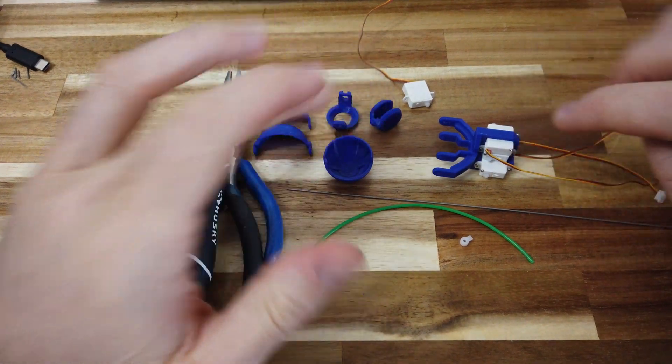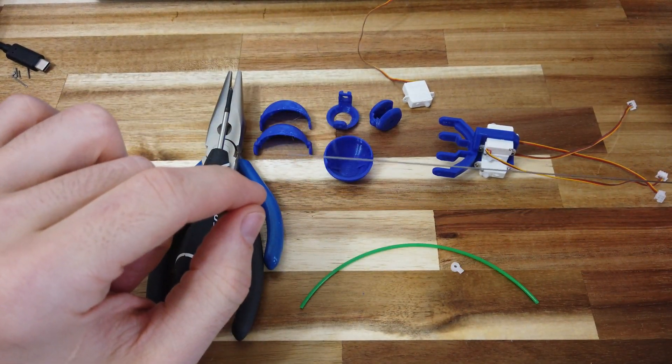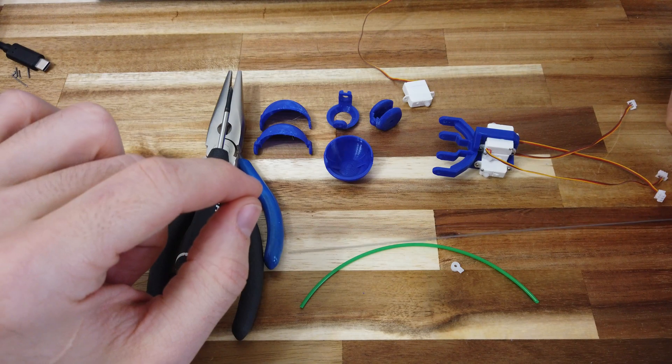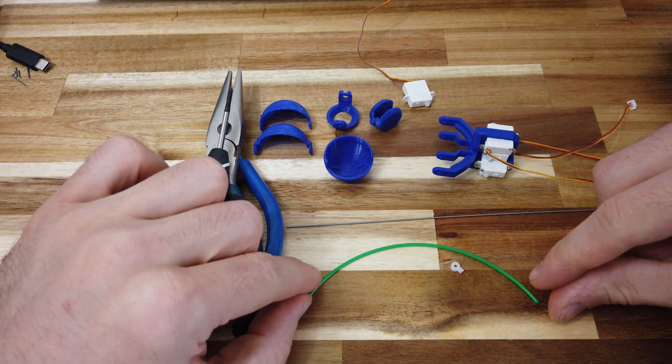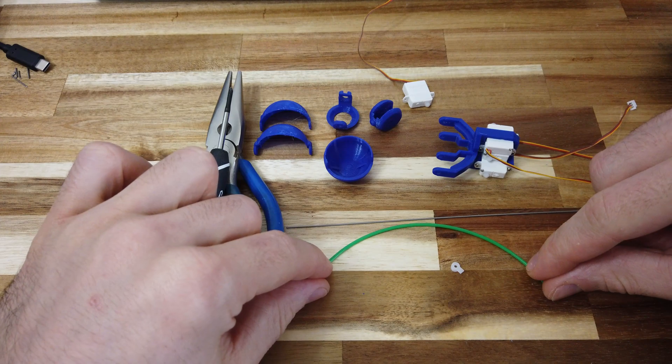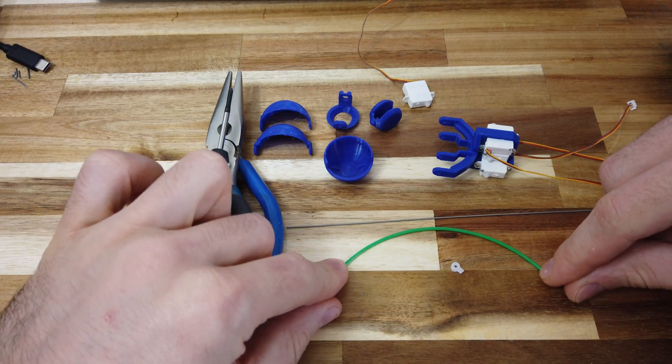In addition to the 3D printed parts and the servos, I've got some 30 thousandths music wire, which is just a stainless steel that can be bent, a short length of 3D printer filament, and this is 1.75mm.